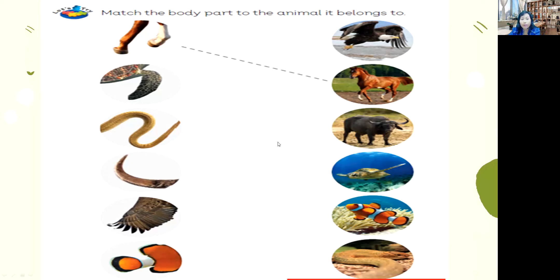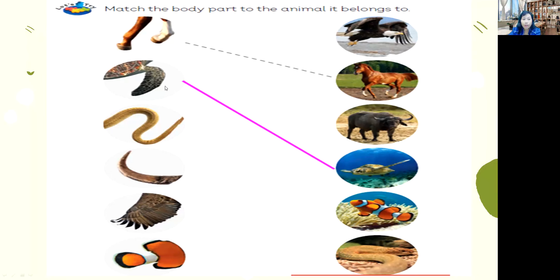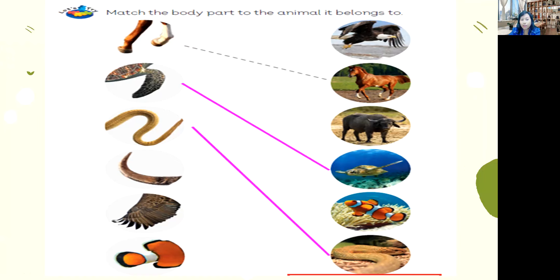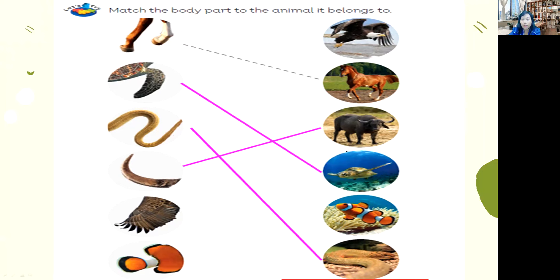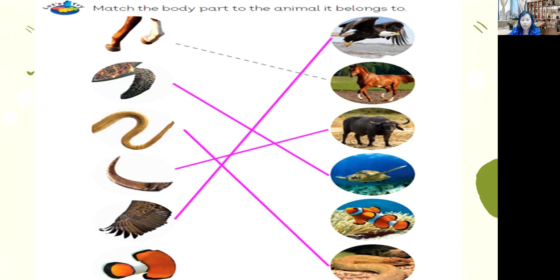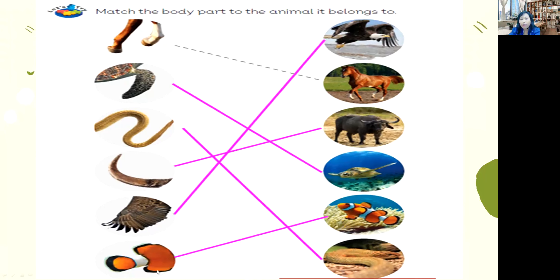Let's check your answers. This one is a flipper — it belongs to a turtle. This part belongs to a snake. This one belongs to a buffalo. This part belongs to an eagle. And the last one is a tail of a fish.